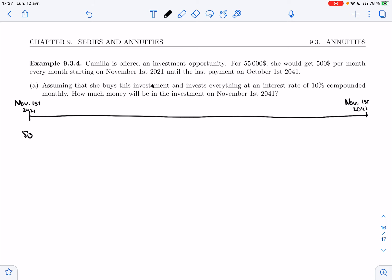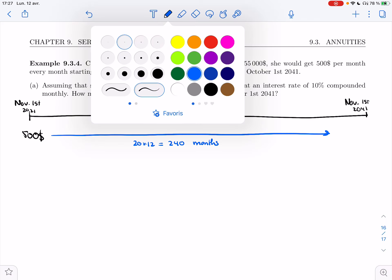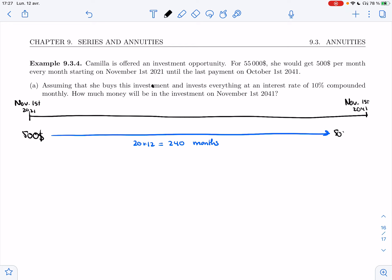So we have our first $500. We invest it for how many months? So it's 20 years. So 20 times 12, that's 240 months. So at the end, that $500 will have become, we have an interest rate of 10% monthly, and then 240 months. That's the first payment.